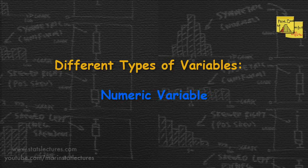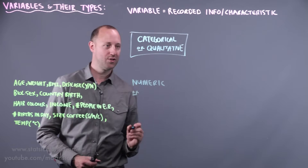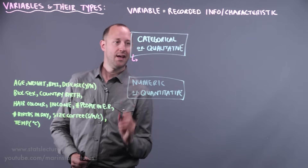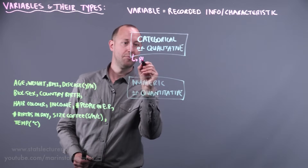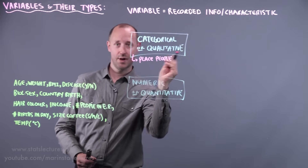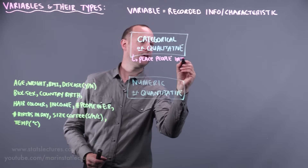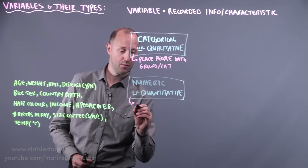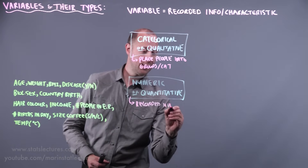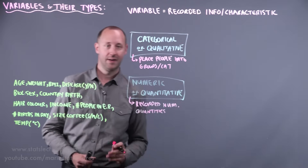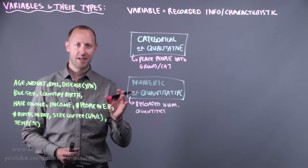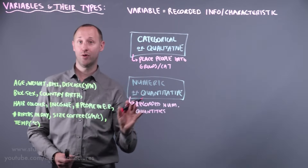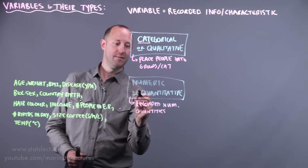The other type of variable is often labeled numeric, or quantitative — it records quantities. Categorical variables place people or units into groups or categories; numeric variables record numeric quantities for each person or case. There are other names used for these as well. Throughout this set of videos, I'll refer to variable types as categorical or numeric and abbreviate them as cat or num.